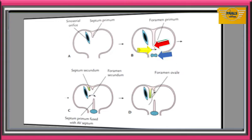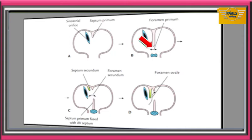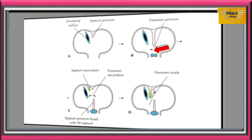A gap is left between the lower end of septum primum and the septum intermedium. This gap or foramen is called foramen primum or ostium primum. The atrial chamber now has right and left atrial chambers. Later, septum primum will fuse with the AV septum or septum intermedium, sealing off the foramen primum. As this is happening, the upper part of septum primum will break down, creating another entrance into the newly partitioned left atrium.